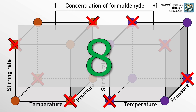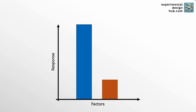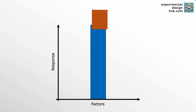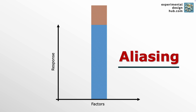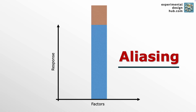The only issue here is that by reducing the number of experiments, some effects overlap, so you can only understand their combined impact on the response instead of their individual contributions. This phenomenon is called aliasing. But don't worry — let me show you why you don't need to be afraid of aliasing.